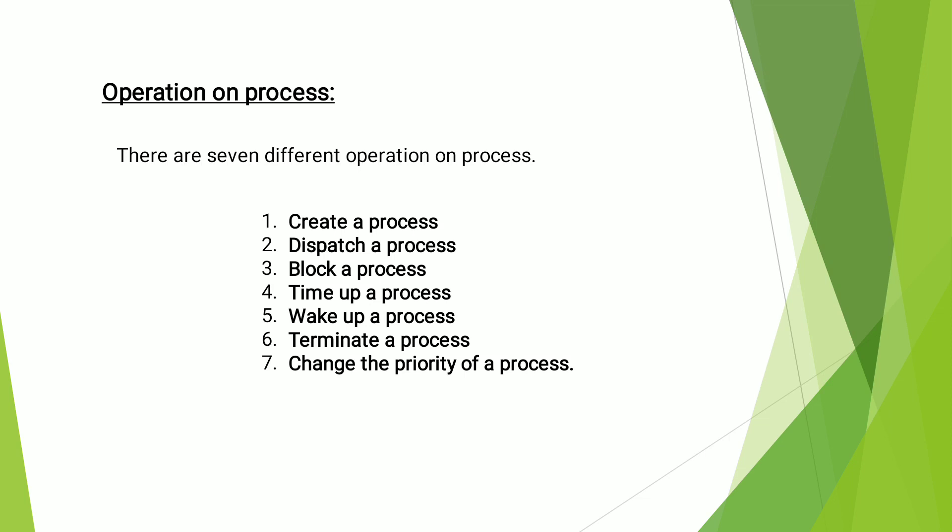There are seven different operations on a process: Create a Process, Dispatch a Process, Block a Process, Time up a Process, Wake up a Process, and Change the Priority of a Process.